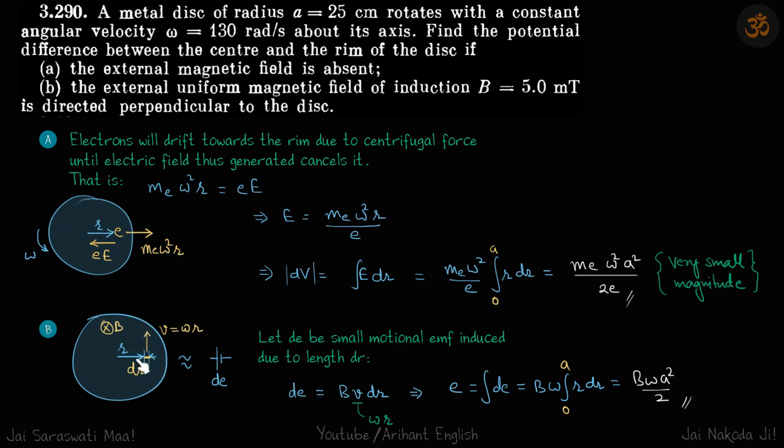So the field is inside the plane. When the conductor is rotating like this, let's take a small element dr here at a distance r. So small emf will be induced in this dr element. So we are going to integrate that from center to rim to find the total emf between the two points.